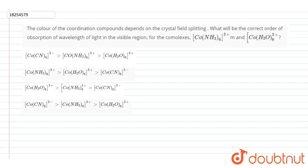In this question, we are saying that the color of the coordination compound depends on the crystal field splitting energy. What will be the correct order of the absorption of wavelength of light in the visible region for the complexes? We will give you two different complexes and the correct order for the observation of wavelength. Let's solve this.